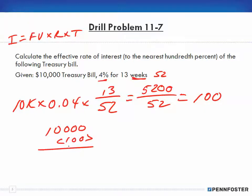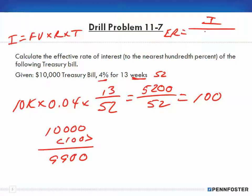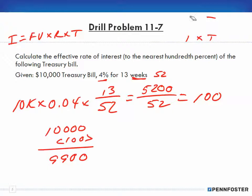Now we take the $10,000 and subtract the $100, and we end up with $9,900 in proceeds. For the effective rate, we have interest over proceeds times time. Remember the formula — interest equals principal times rate times time — we don't have to memorize it, just understand it.